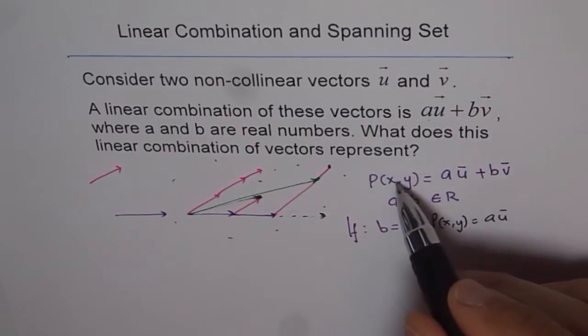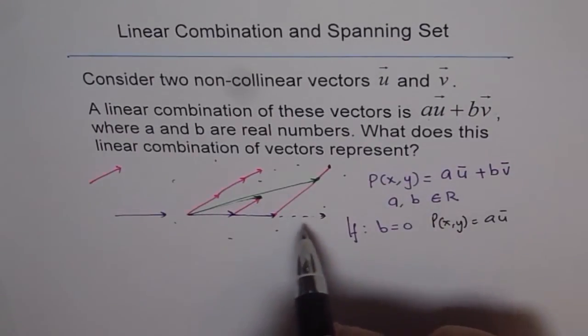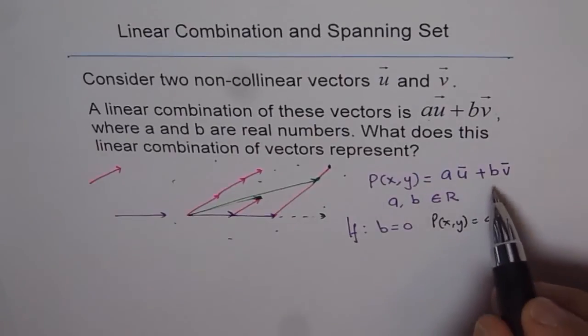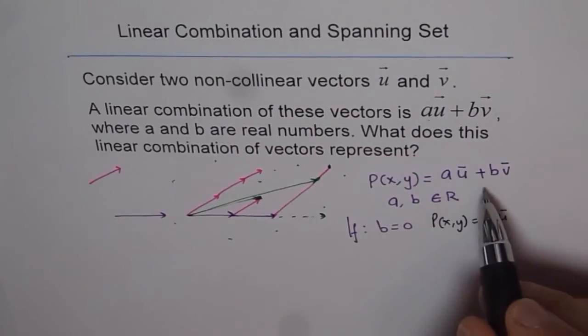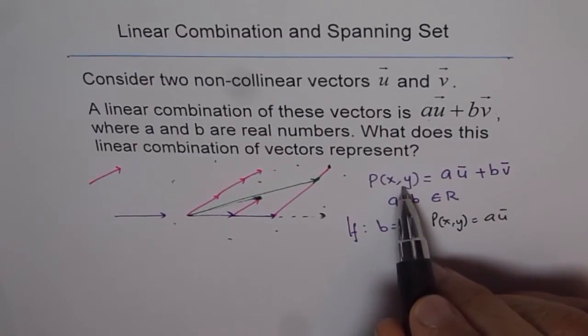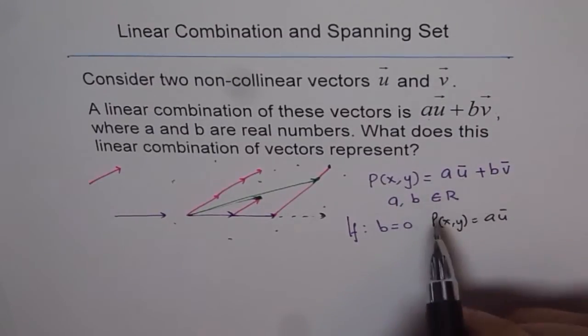So the vector will be collinear in the same plane and in the same line. If one of the coefficients is 0, if b is 0, then the vector will be parallel to vector u.